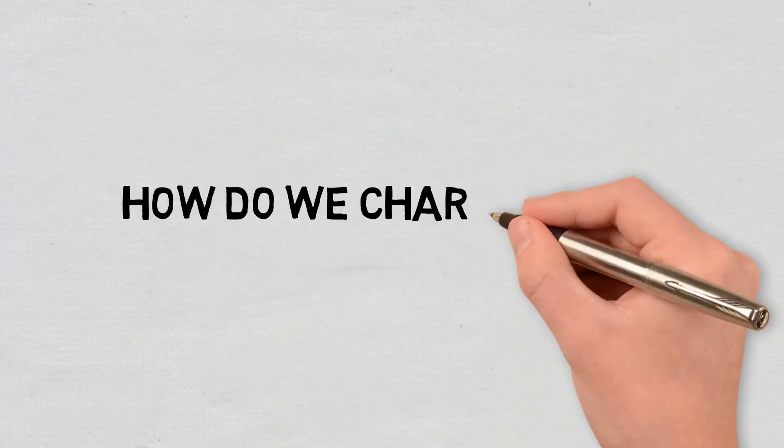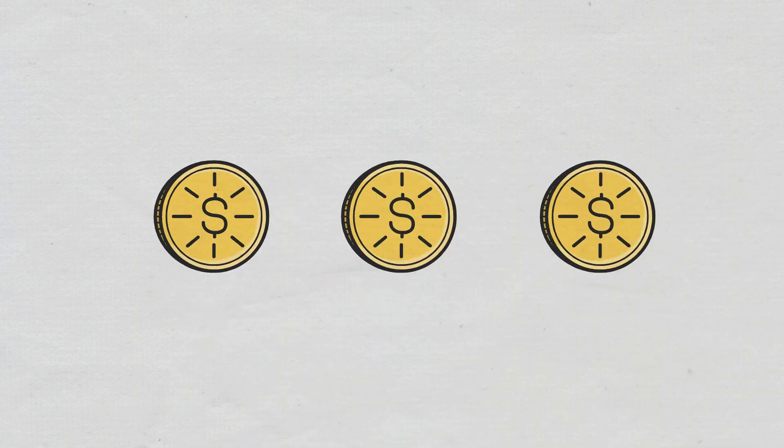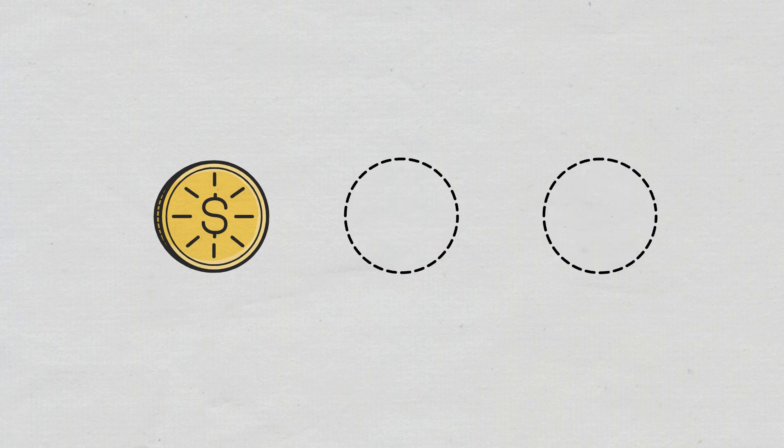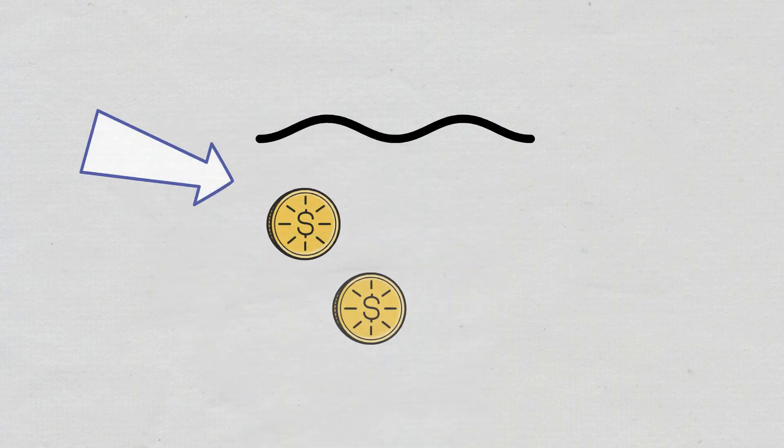How do we characterize impermanent loss? This concept reflects the temporary loss of a part of the liquidity owned. The phenomenon occurs within liquidity pools where the liquidity provider must include proportional amounts of two different tokens.